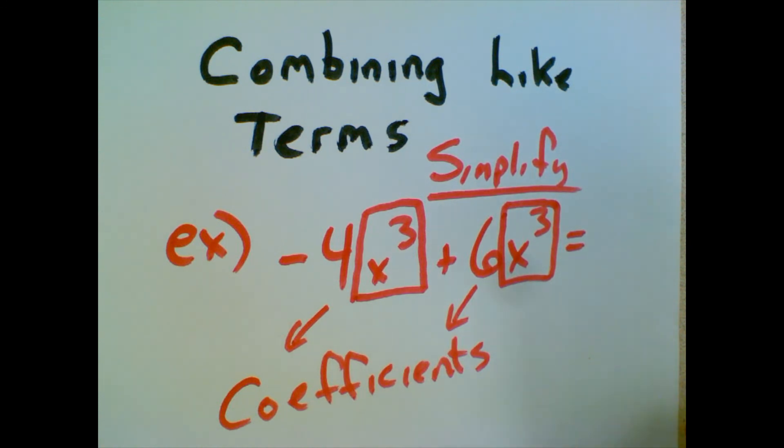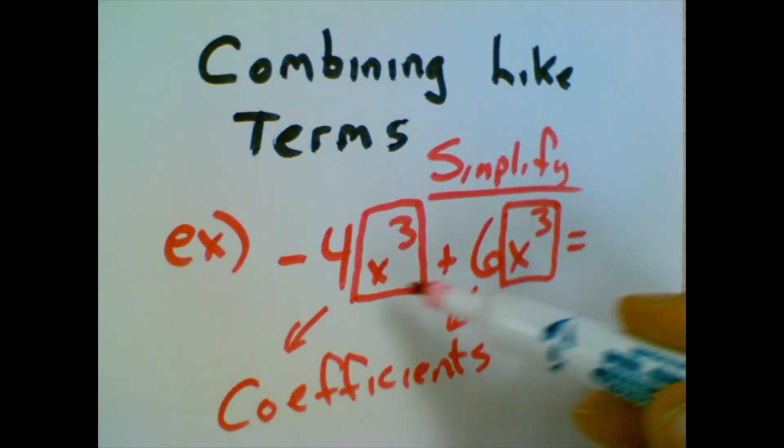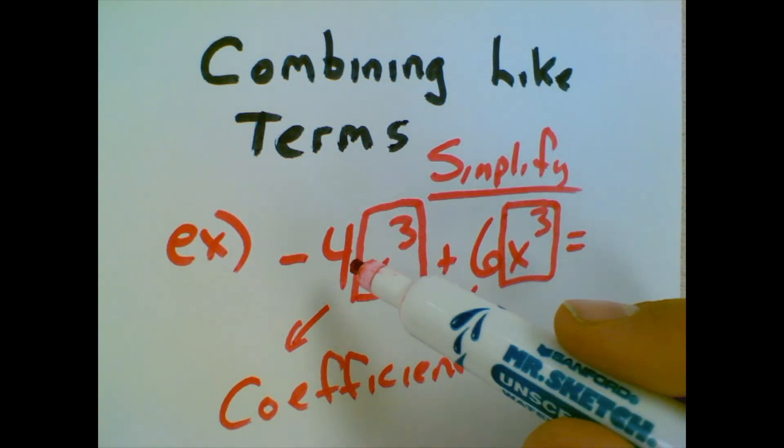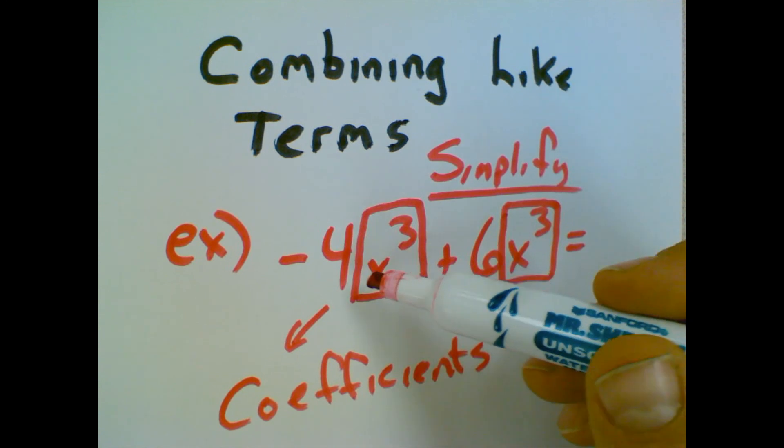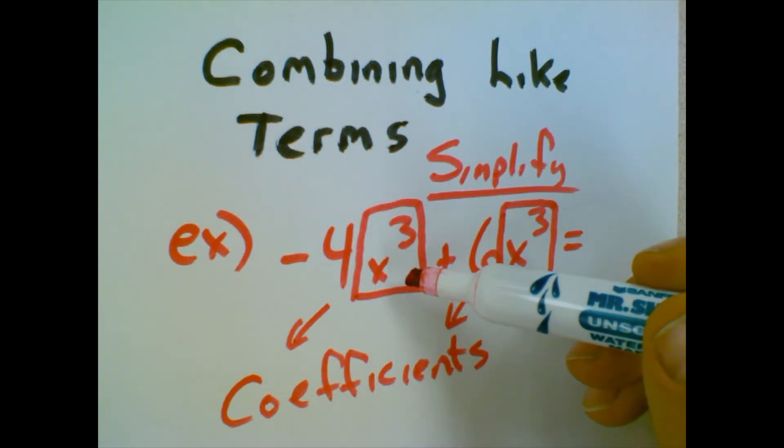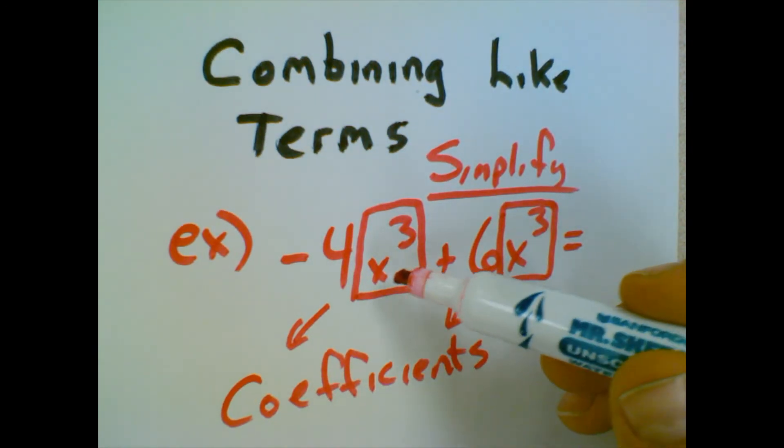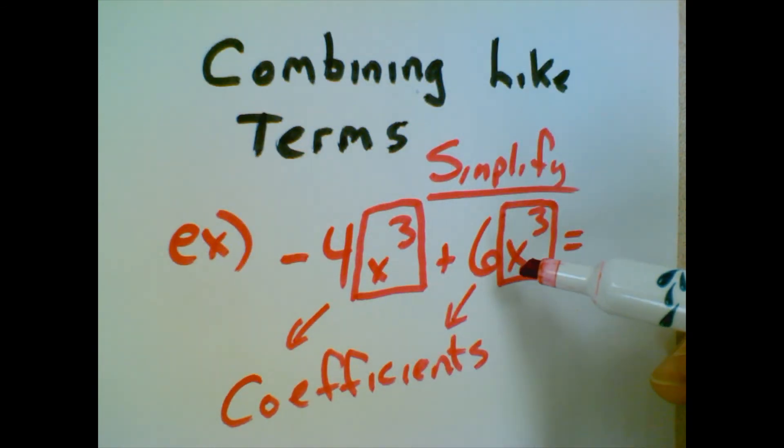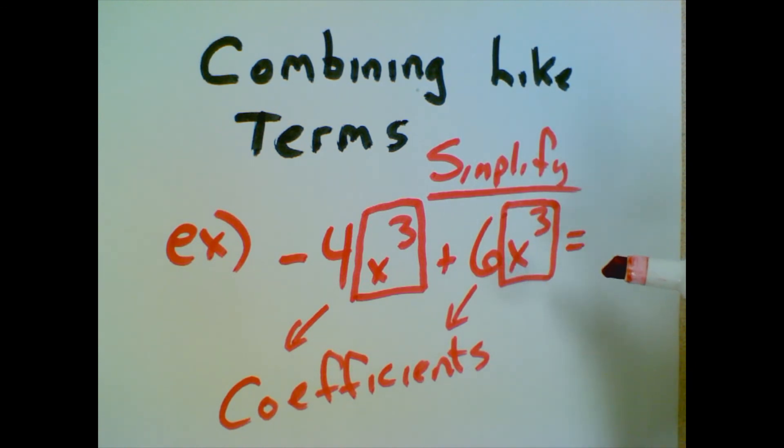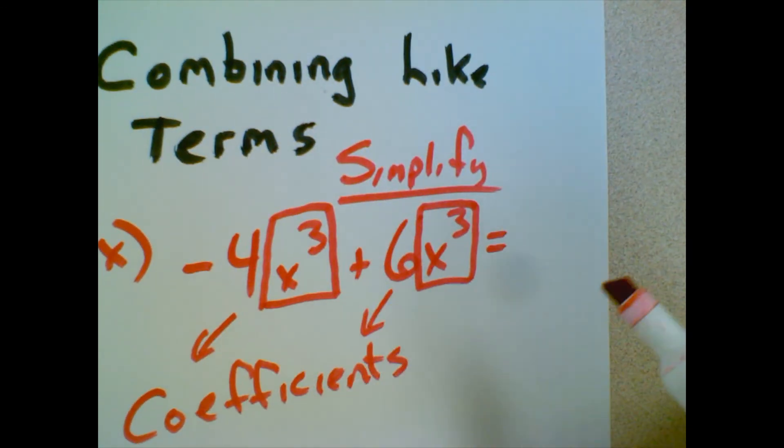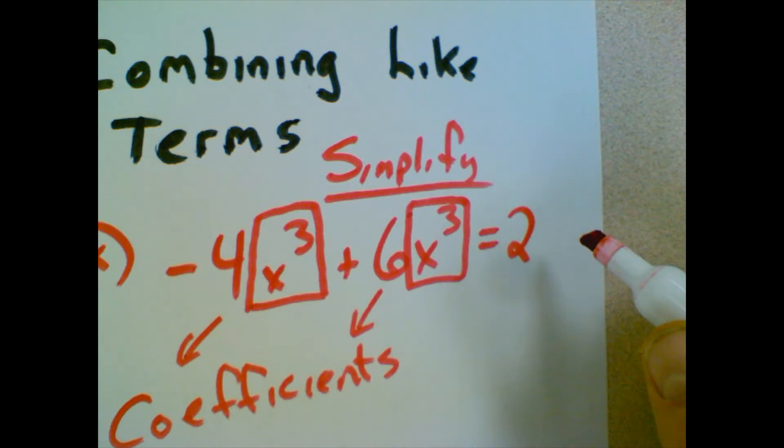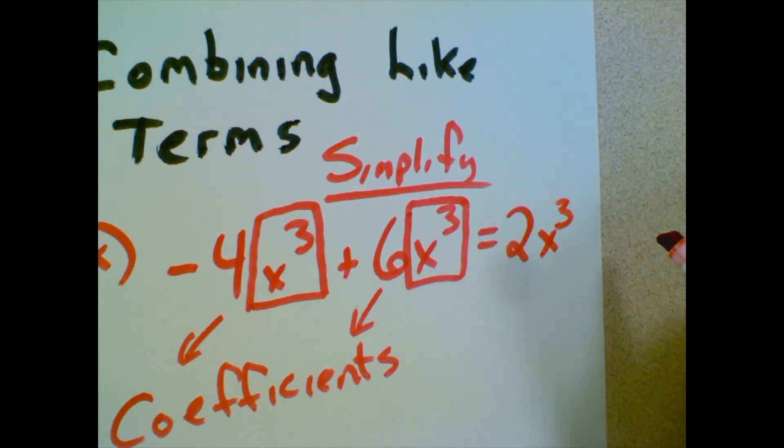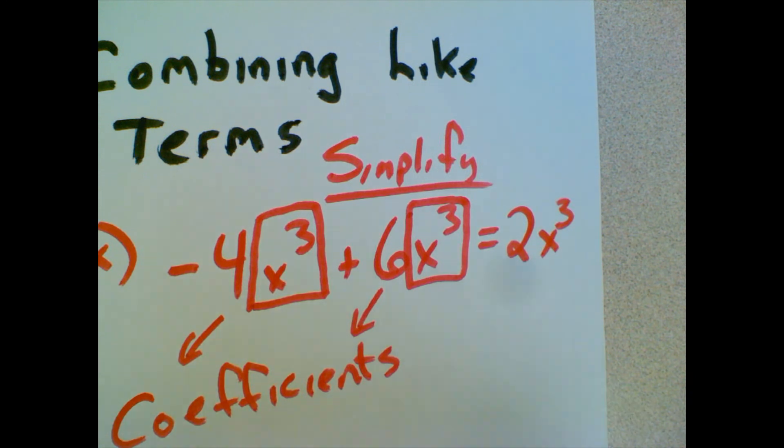And an analogy you could use is, if you think of these coefficients, these numbers as people, if they have the same, I call them backpacks. If this backpack, which is x cubed, so if negative 4 is a person, they have this backpack on, it's x cubed. We can combine all the people that have the same backpacks. So 6 has the same backpack also, x cubed. Everything in the box has to be identical in order to combine them. So this example would be negative 4 plus 6. The rule is you add the coefficients together. Negative 4 plus 6 is 2, and you keep the same backpack. So the combined like terms would be 2x cubed.